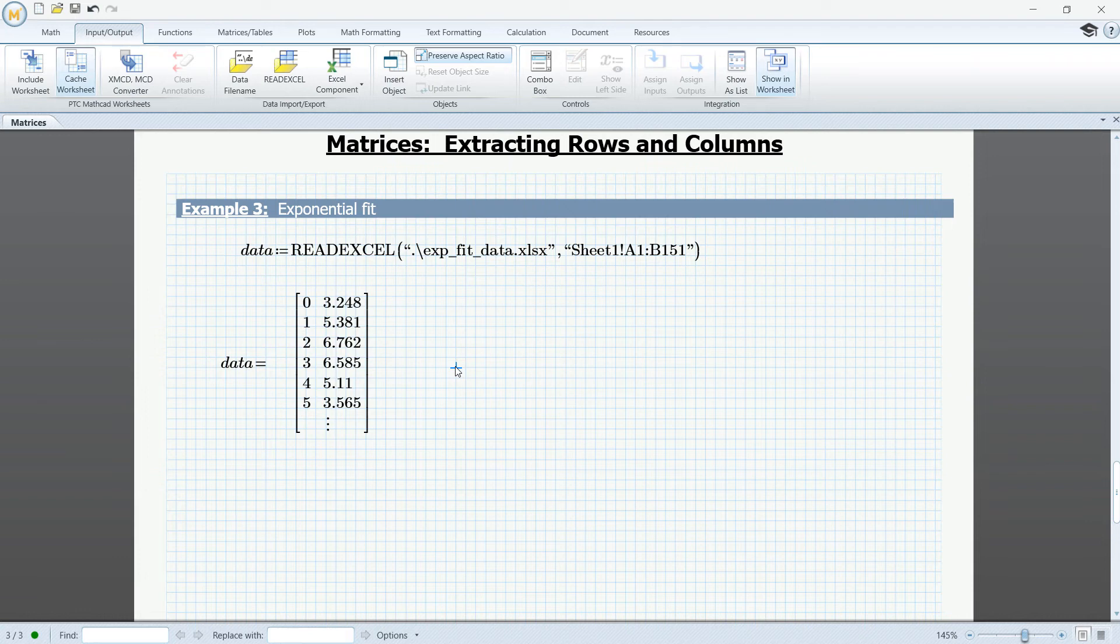Now, the function that we're going to use is called expfit and we'll do an exponential fit of our data. And this function takes in two arguments. So, this is where the column operator comes into play because it allows us to split the data into two vectors.